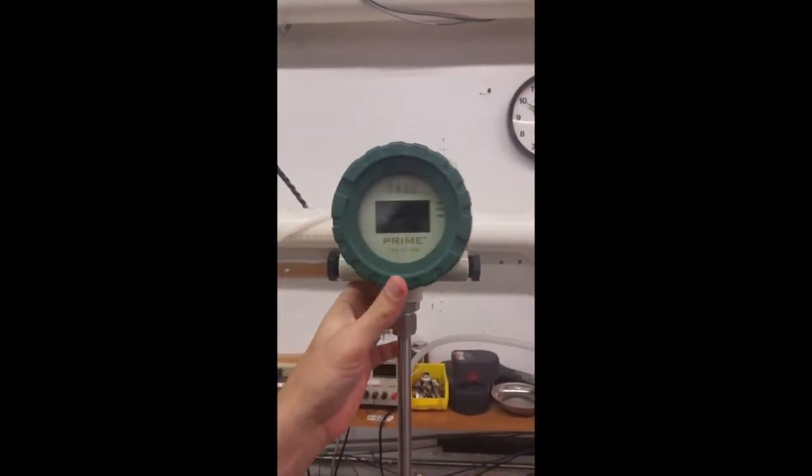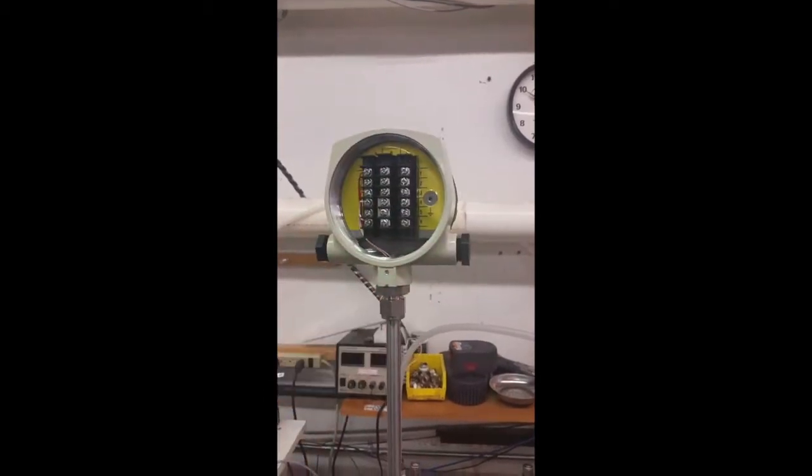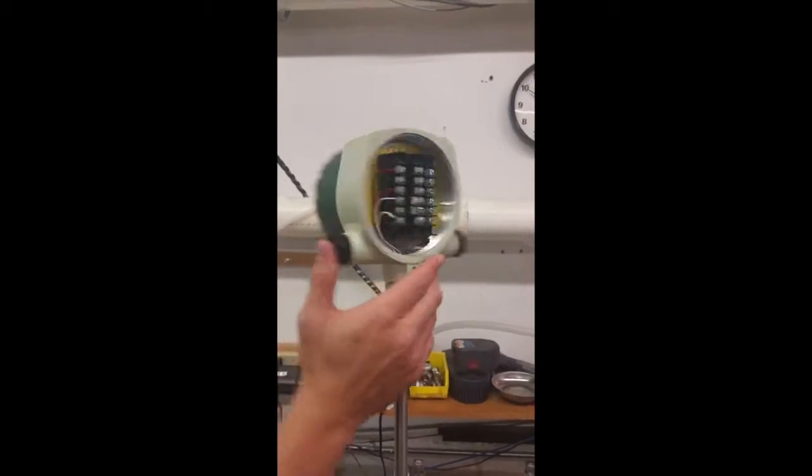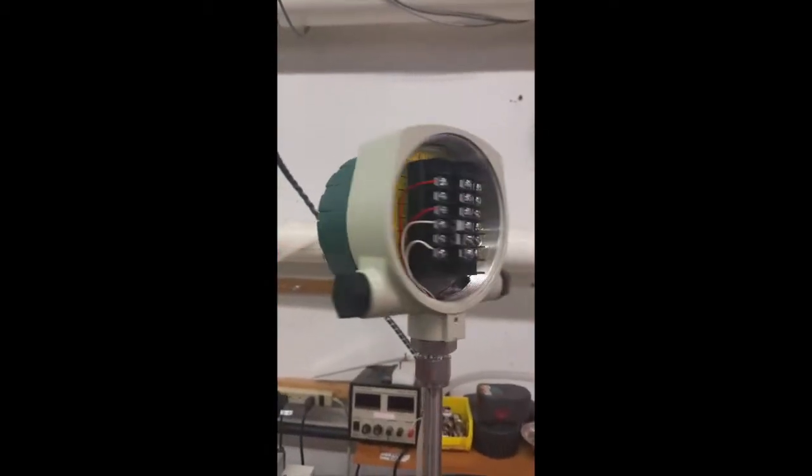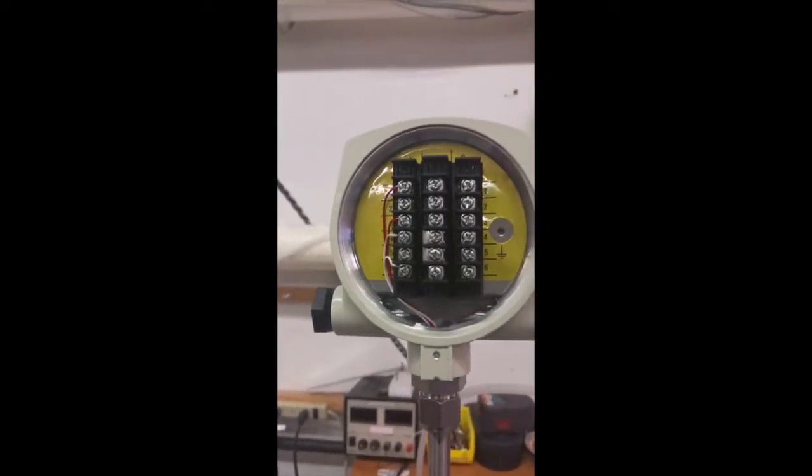Today we're going to wire the internally powered 4 to 20 milliamp output for a Sage Prime thermal mass flow meter. This particular meter is DC powered and we'll show you what proper wiring looks like.